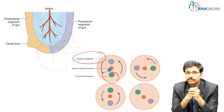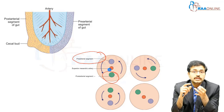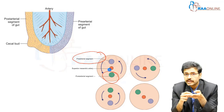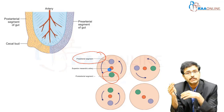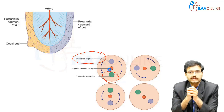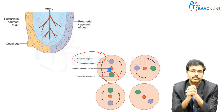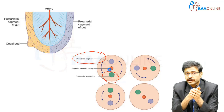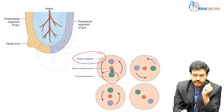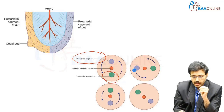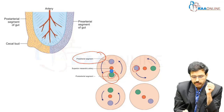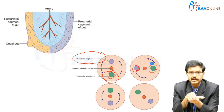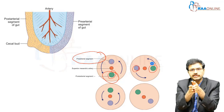The pre-arterial segment gives rise to the duodenum from the second part downwards from the ampulla of Vater, the jejunum, and the ileum up to the terminal ileum. From the terminal ileum, the cecum, appendix, ascending colon, and the right two-thirds of the transverse colon arise from the post-arterial segment. Subsequently, the pre-arterial and post-arterial segments undergo a rotation of 90 degrees in the anti-clockwise direction. This rotation makes the pre-arterial segment, which was located above the superior mesenteric artery, come to lie on the right of it, while the post-arterial segment comes to lie on the left. What was initially vertical now becomes transverse.